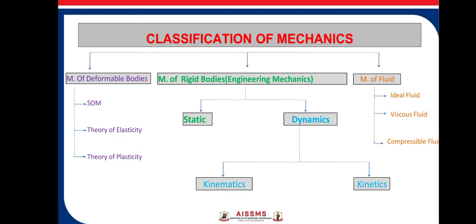Now, mechanics is broadly classified into three main categories: mechanics of deformable bodies, also called strength of material; mechanics of rigid bodies, also called engineering mechanics, which is what we are going to learn in this course; and mechanics of fluids. Mechanics of deformable bodies is further classified into three types: strength of material, theory of elasticity, and theory of plasticity.